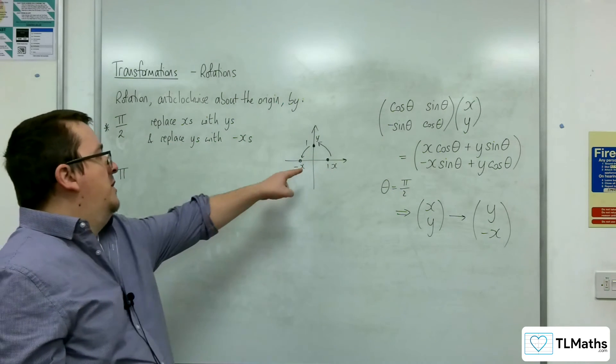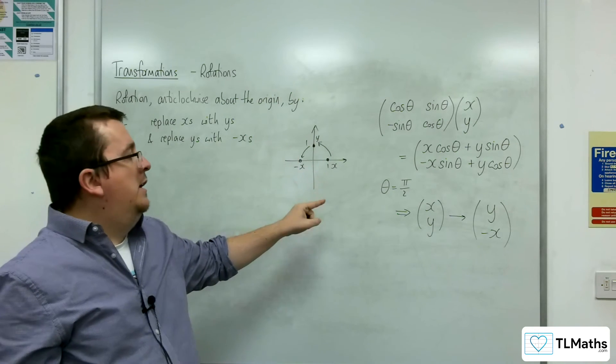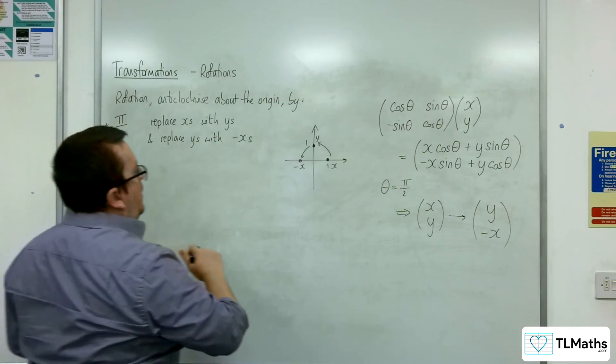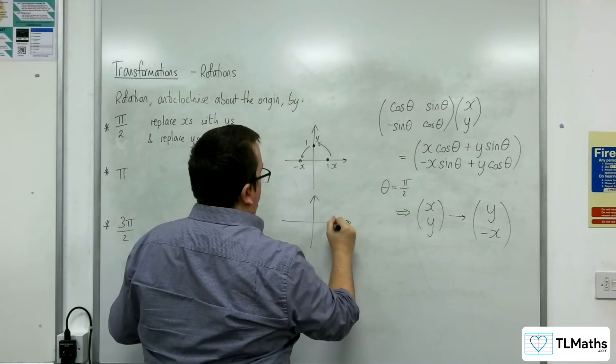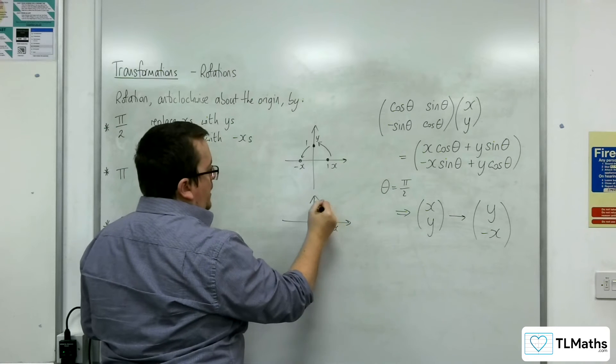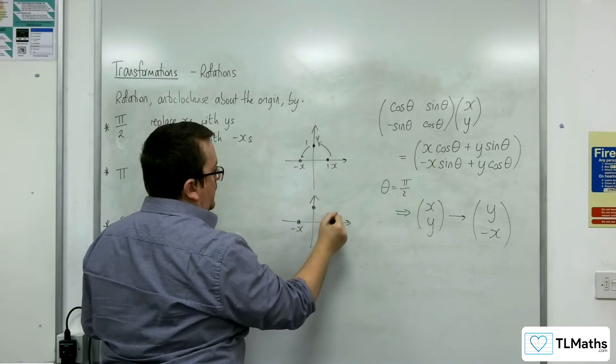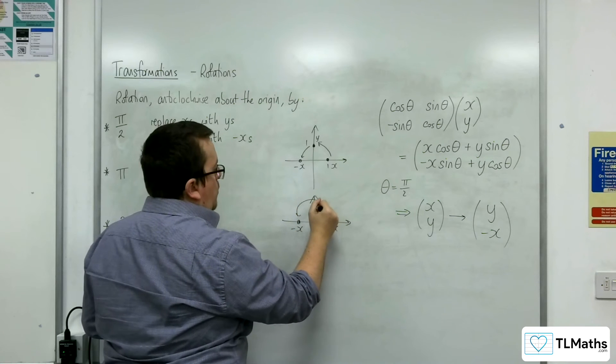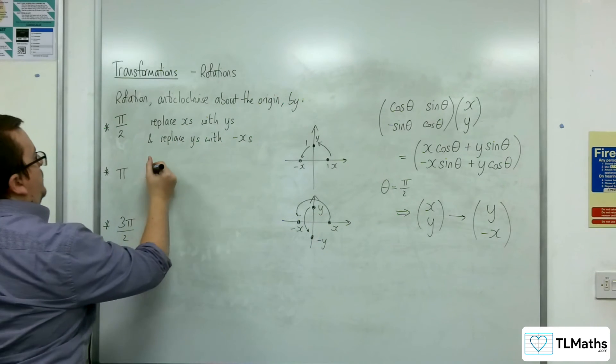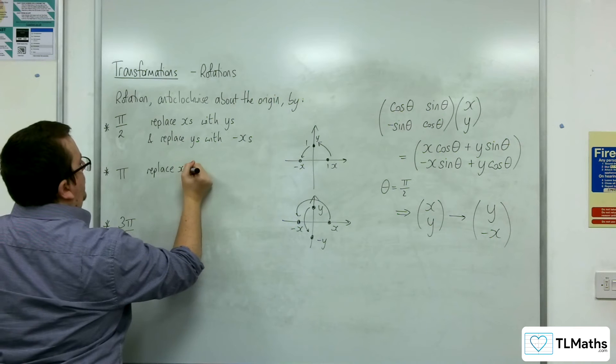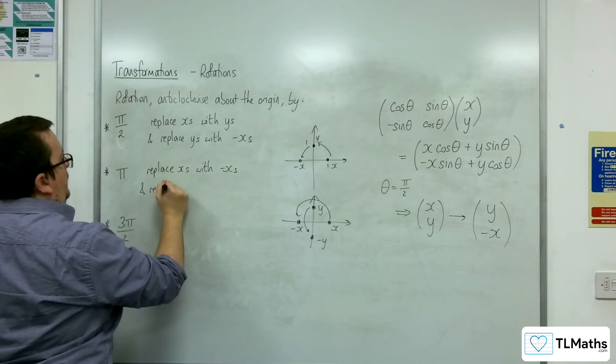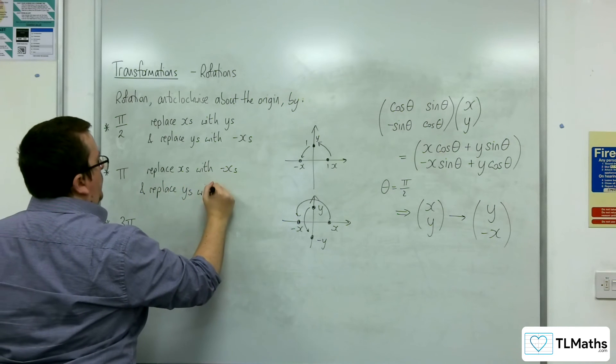So you can just kind of visualize it on this diagram here, rather than have to substitute into the rotation matrix. So if we want to rotate by an angle of pi, so this point, our x, is going to go over here to minus x. And our point here, y, is going to go down here to minus y. So to do this, we replace x's with minus x's, and replace y's with minus y's.